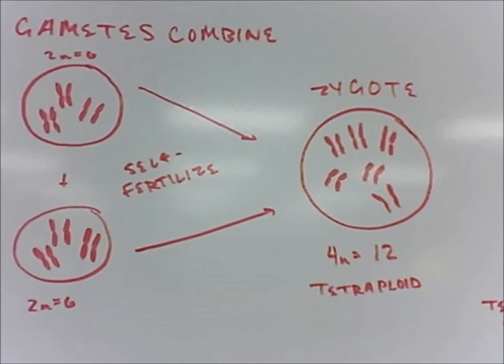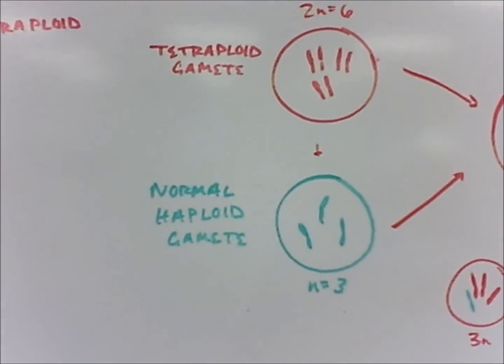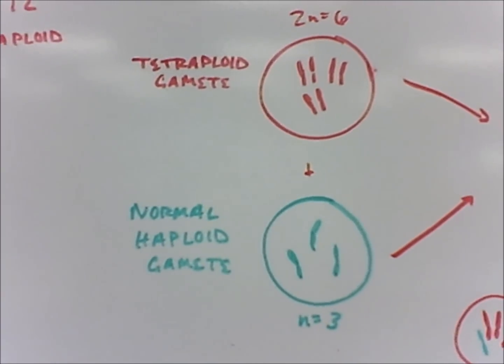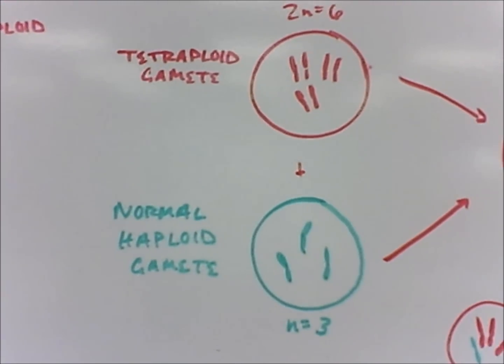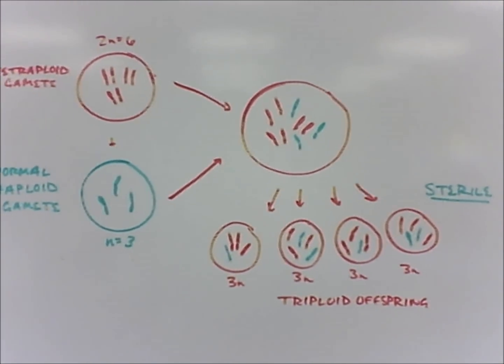If the tetraploid organism attempts to interbreed with a normal diploid organism, the offspring are triploids, which means that they have unpaired chromosomes.